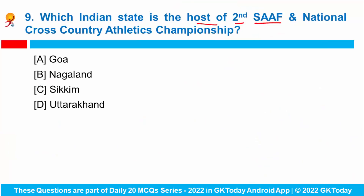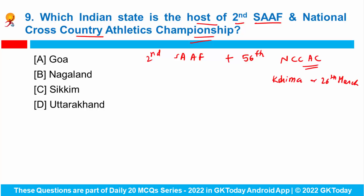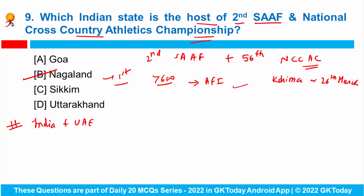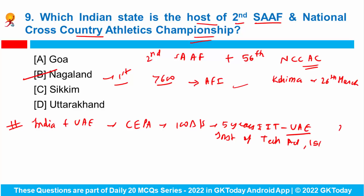Question number nine: which Indian state is the host of the second SAAF and National Cross Country Athletics Championship? The second South Asian Athletic Federation Cross Country Championship and the 56th National Cross Country Athletics Championship will be held in Kohima on 26th March. The correct answer is Nagaland. This will be the first ever international athletics event in Nagaland, with more than 600 athletes participating. India and UAE also signed the historic Comprehensive Economic Partnership Agreement to boost trade to 100 billion dollars over the next five years, including an agreement to establish an IIT in the UAE.